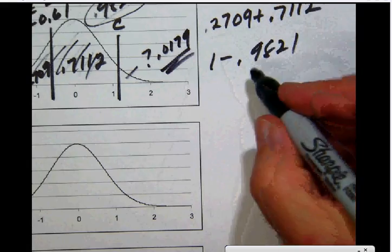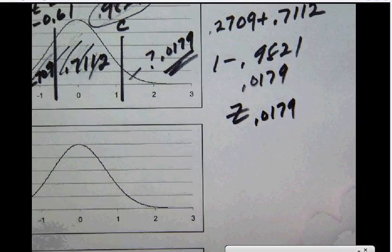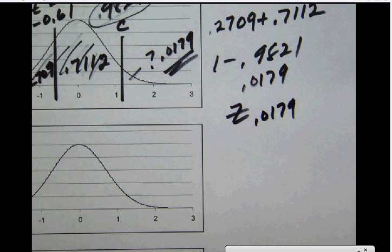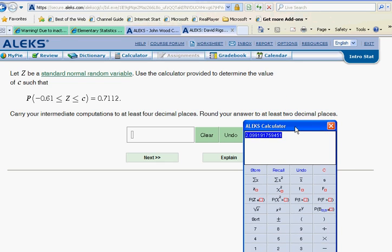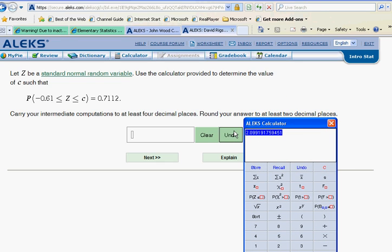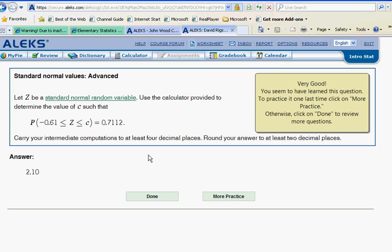And then we can take the z of that. So the z of 0.0179 is what we're going to want to do. So up here we will take the z, 0.0179, get the answer 2.099. Notice that we want to round the answer to two places, so that's going to round 2.10. So over here, 2.10. Okay, and we see that that works.